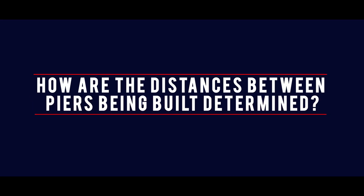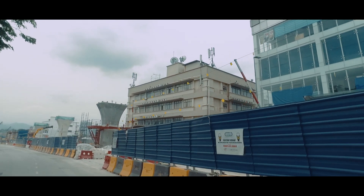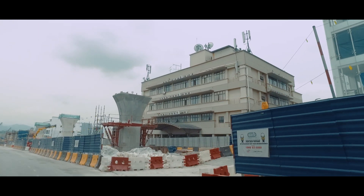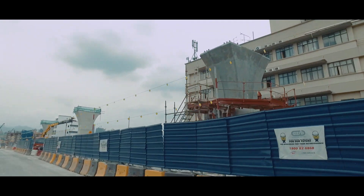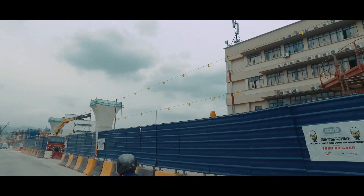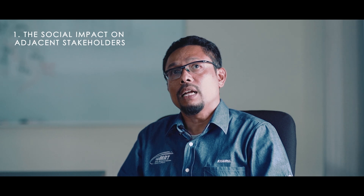How are the distances between PAs being determined? The factors taken into consideration to determine the pier distance are the social impact on adjacent stakeholders and the drainage or river crossing.